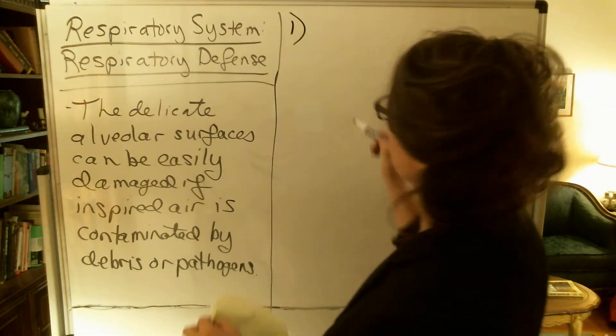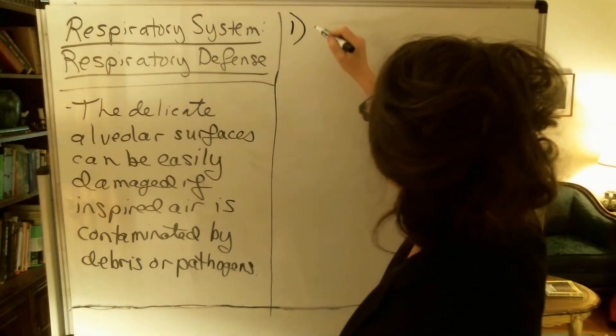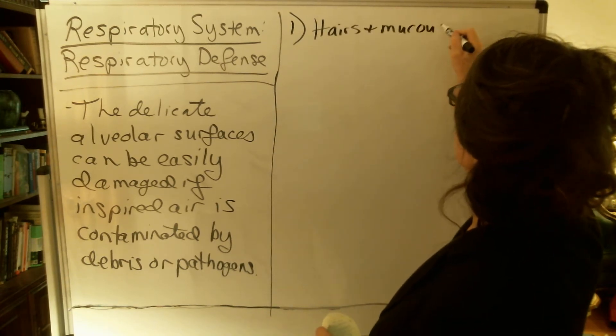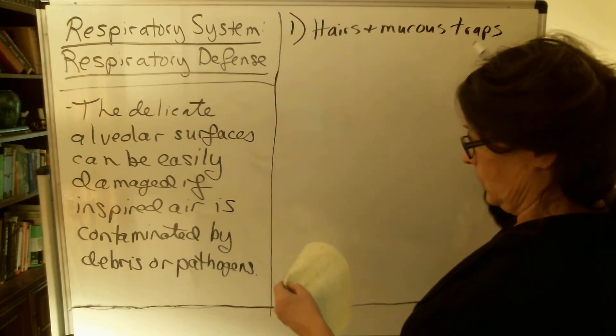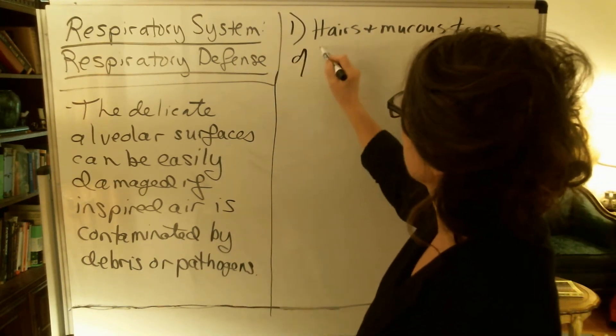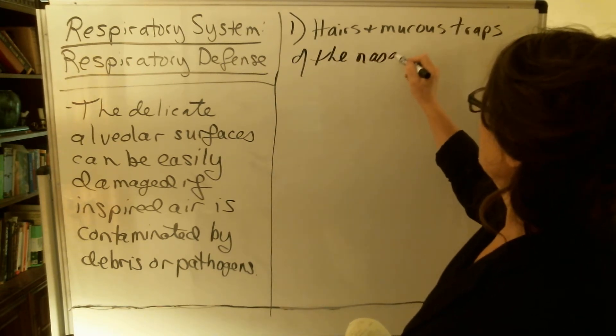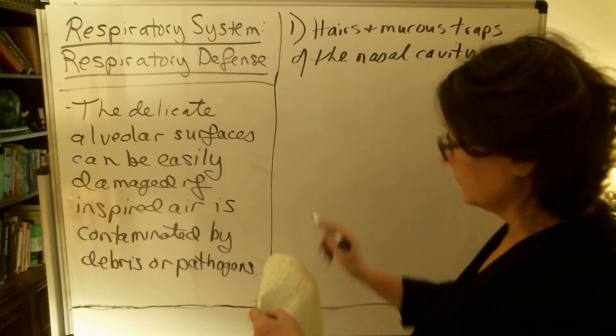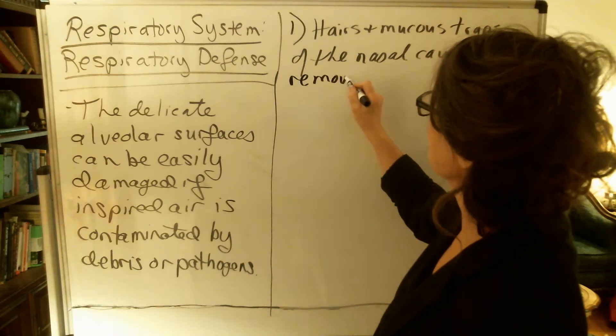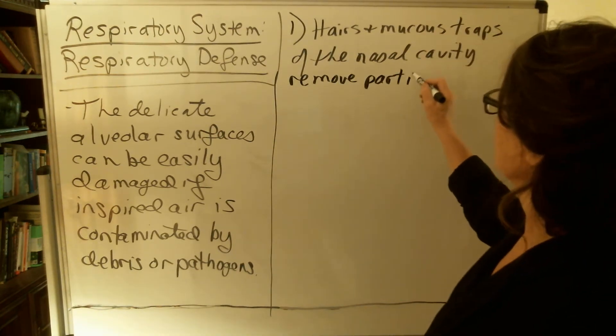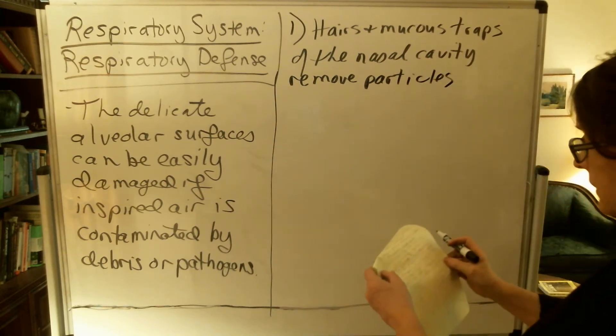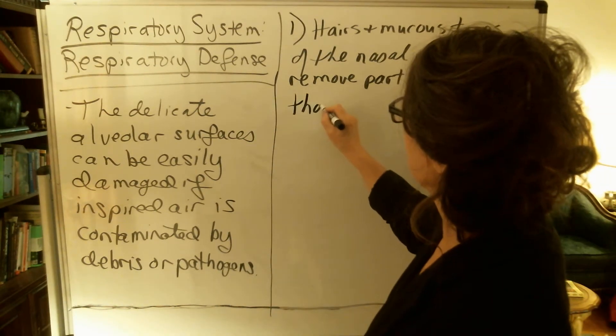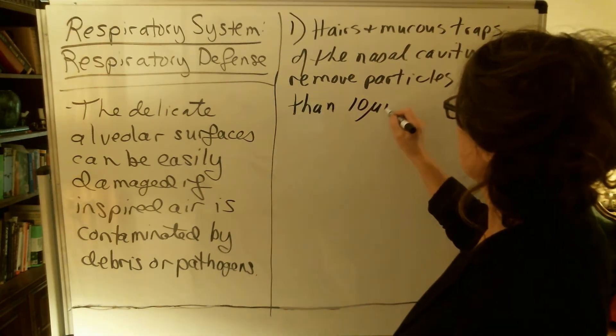Starting with the largest parts of this and working our way down, we have hairs and mucus traps of the nasal cavity. These remove particles that are larger than 10 microns.